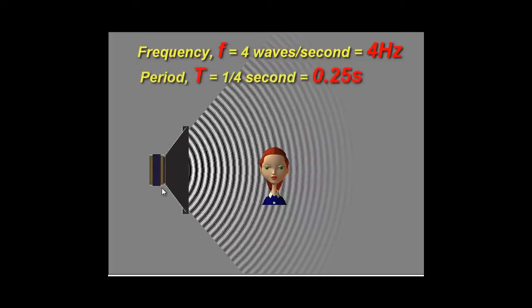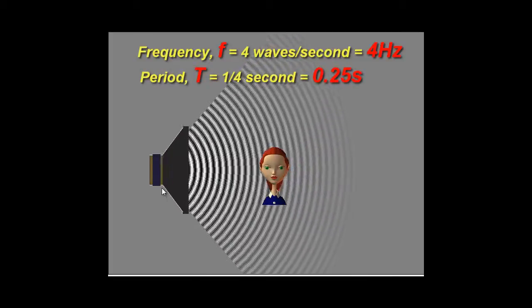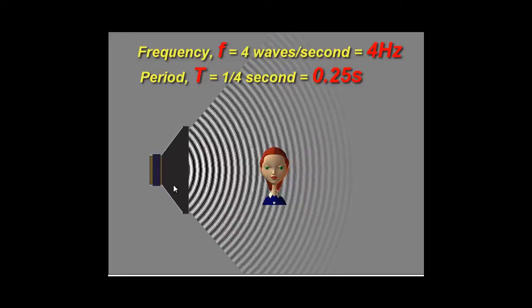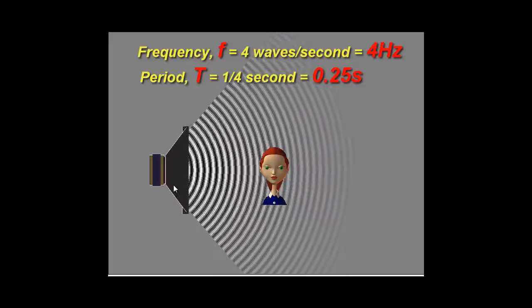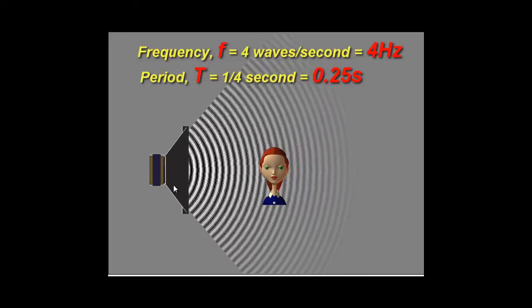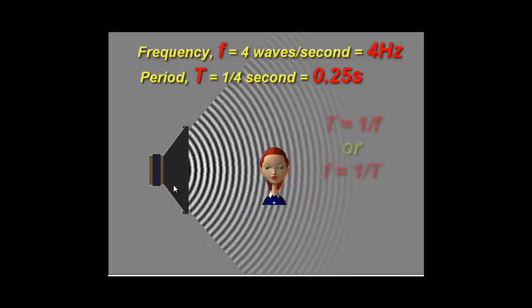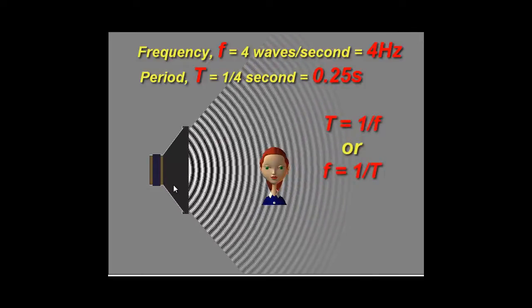If it takes one second to make four waves then each wave only takes a quarter of a second to be generated. So my frequency is four Hertz while my period is one-fourth of a second. We can see right away the relationship is very simple: frequency is related to the period by the inverse.